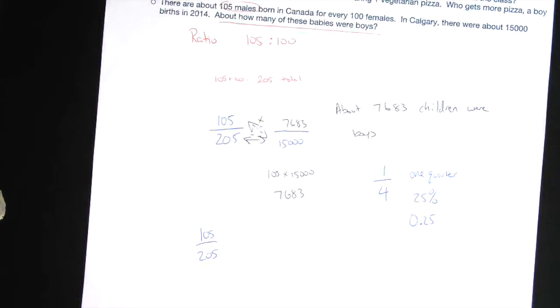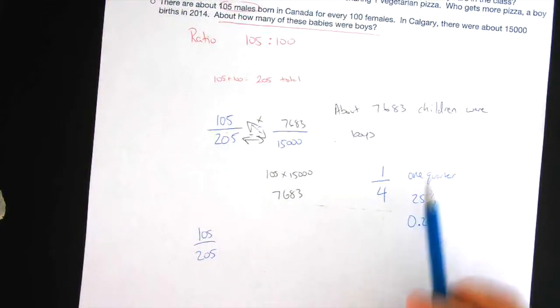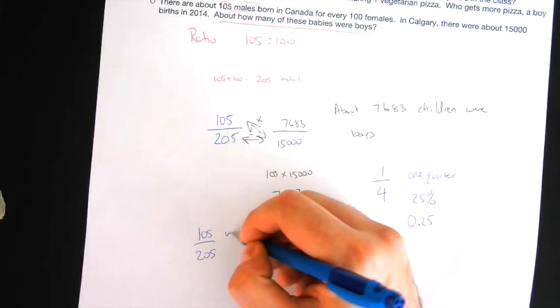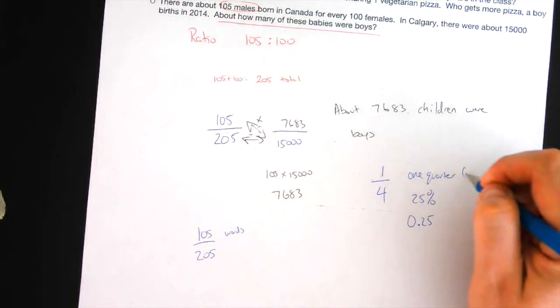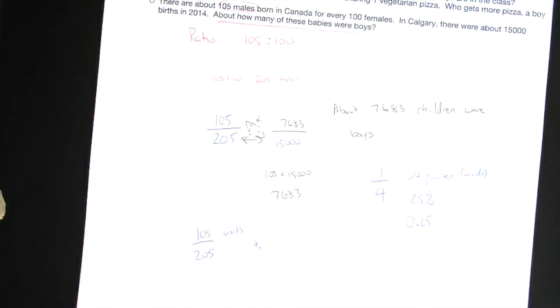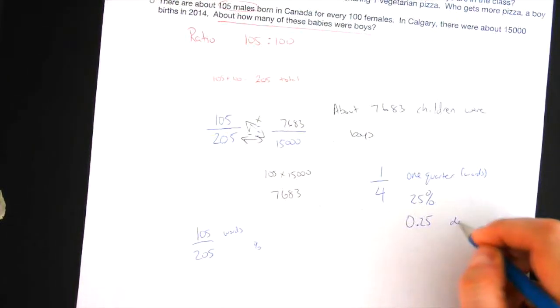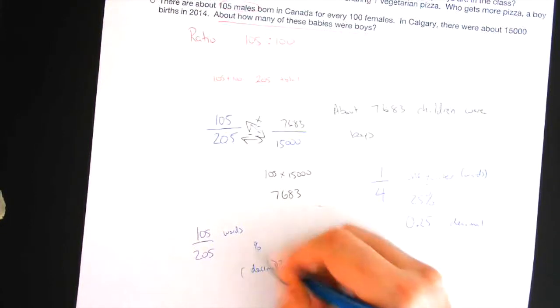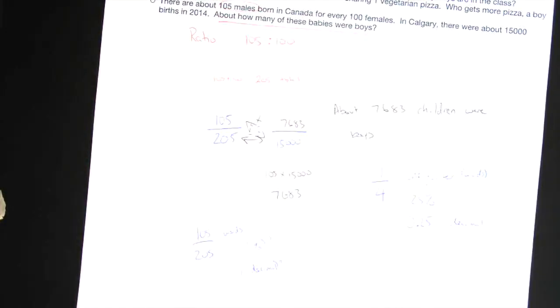Now, this here. If we follow the same structure here. Okay. It doesn't give us a quarter. We're not going to say 105, 205ths. Let's just call it words. Okay. Because here are the words. This is percent. Can I figure out the percentage here? This one here is decimal. Can I figure out the decimal? Is it possible to figure out what the decimal is here? Think of what we did to figure out the decimal in this one. How would you figure out the decimal here?